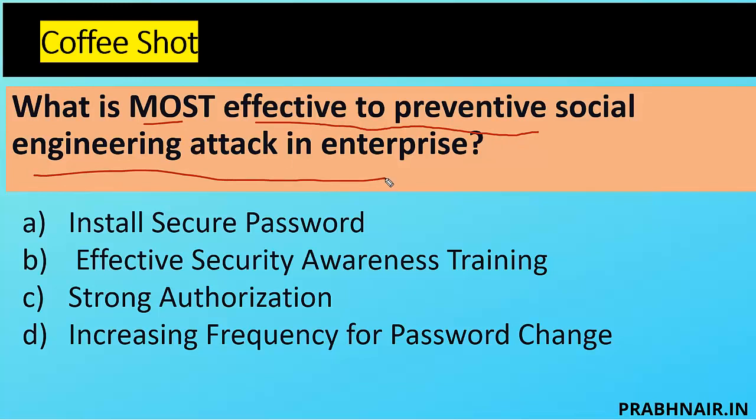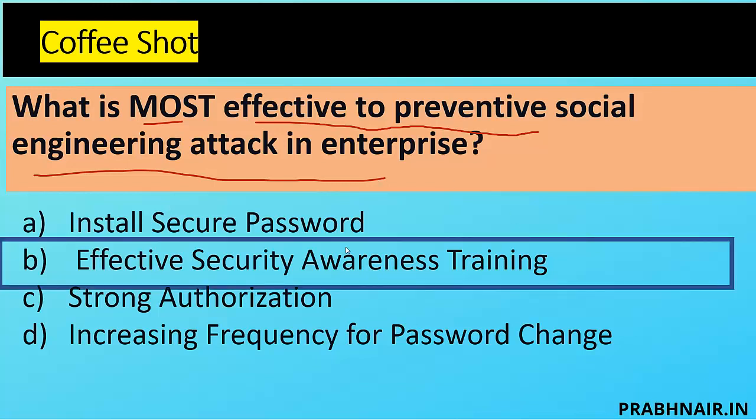Question: what is the most effective way to prevent social engineering attacks in the enterprise? Installing a secure password doesn't guarantee people won't share it. Strong authorization can be bypassed if credentials are shared. Increasing password change frequency doesn't help if sharing continues. Effective security awareness training modifies behavior — guiding people on dos and don'ts. No matter how strong the controls are, if the victim is vulnerable to social engineering — sharing details unknowingly or clicking phishing emails — all controls fail. So the answer is B — effective security awareness training.